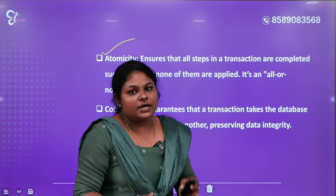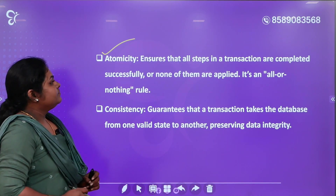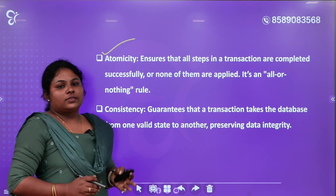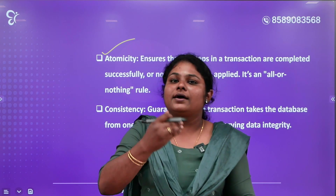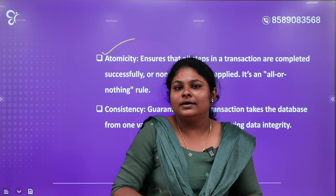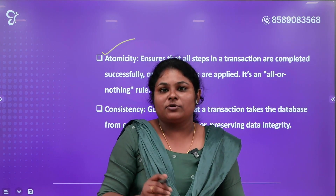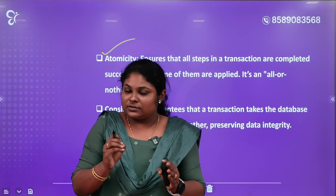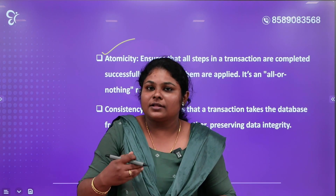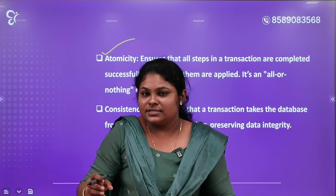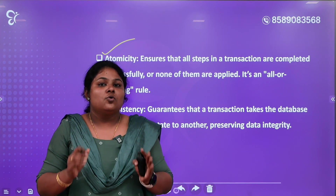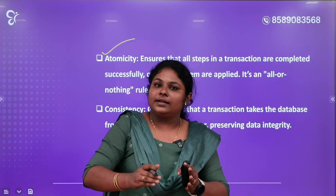First one is Atomicity. Atomicity ensures that all steps in a transaction are completed successfully or none of them are applied — it is an all-or-nothing rule. We need to complete all transactions. For example, if we have a transaction in a bank to deposit 500 rupees, we get the debit and credit.